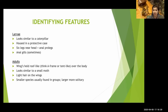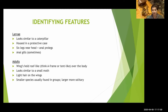Adult caddisfly wings are held like an A-frame or tent over the body, similar to a small moth, with fine hairs on the wings rather than scales. That's one way to confirm it's a caddis and not a moth — hold it up and look for fine filamentous hairs on the wings rather than the powdery scaly feeling of a moth.